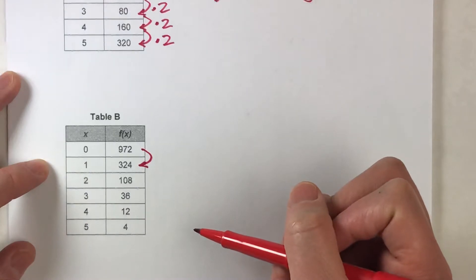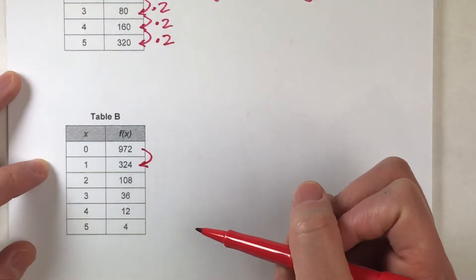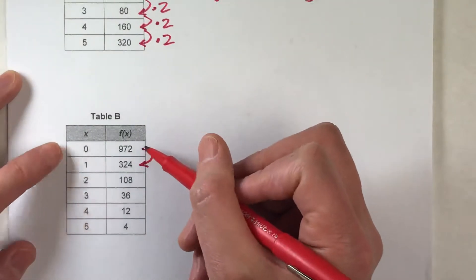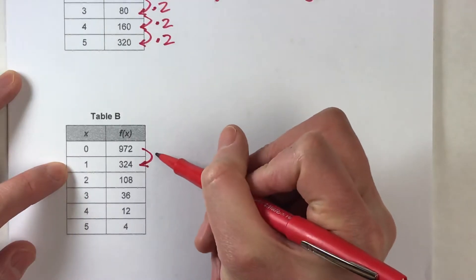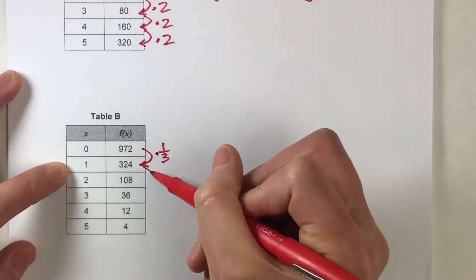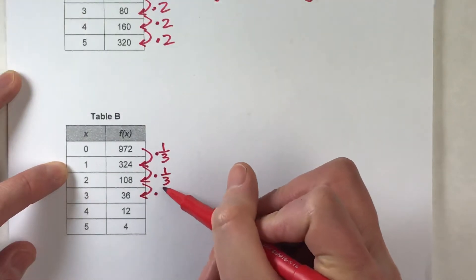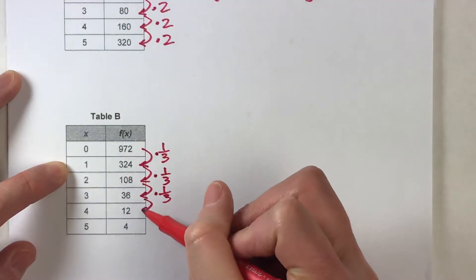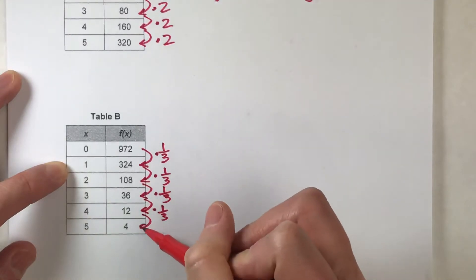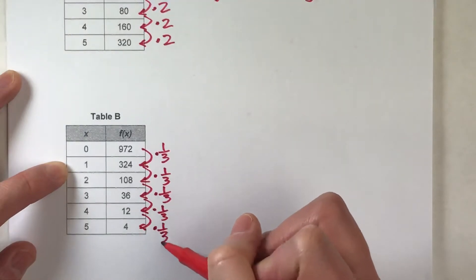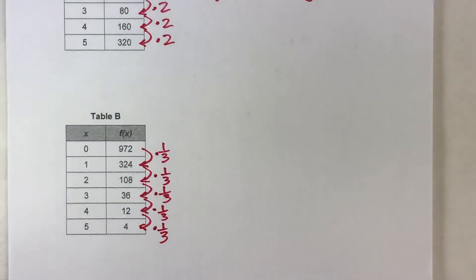But because we want to use this as an exponential, we need to think of multiplication. So, another way of thinking about dividing by three is to multiply by one-third. So, if you think of this as a table where we're taking each value and repeatedly multiplying it by one-third to get the next value, then we know that it's an exponential.